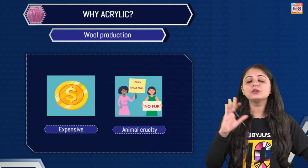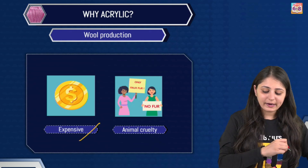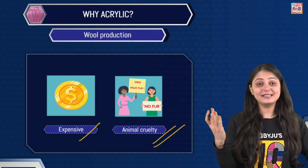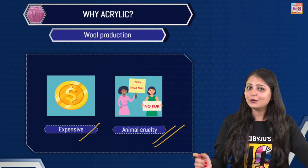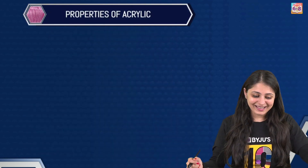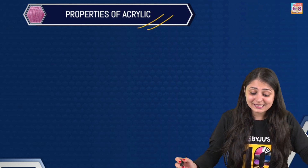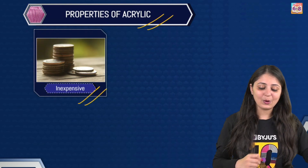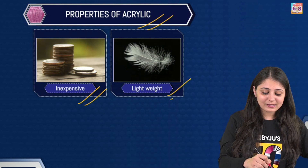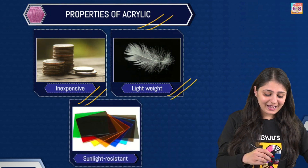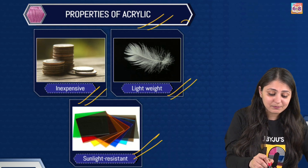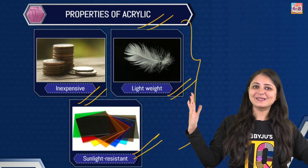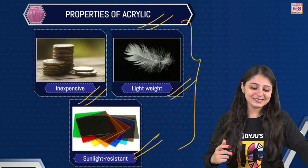Why are we using acrylic instead of wool? Wool is quite expensive and it's also leading to animal cruelty. So we would definitely want to switch to a better alternative, and that's why we moved on to acrylic. Acrylic became really popular due to its low cost and light weight, and of course it's also sunlight resistant. Plus it's available in a variety of colours — all the more reason we are attracted to use acrylic.